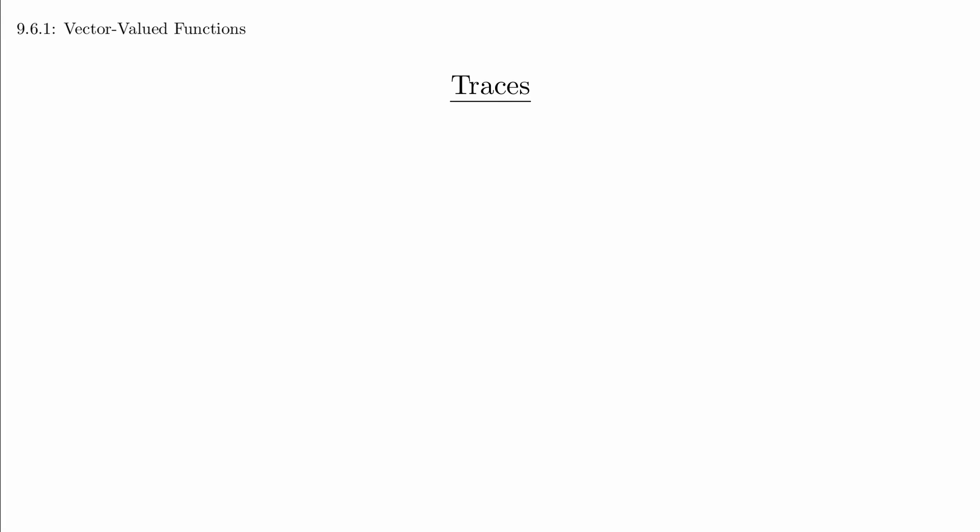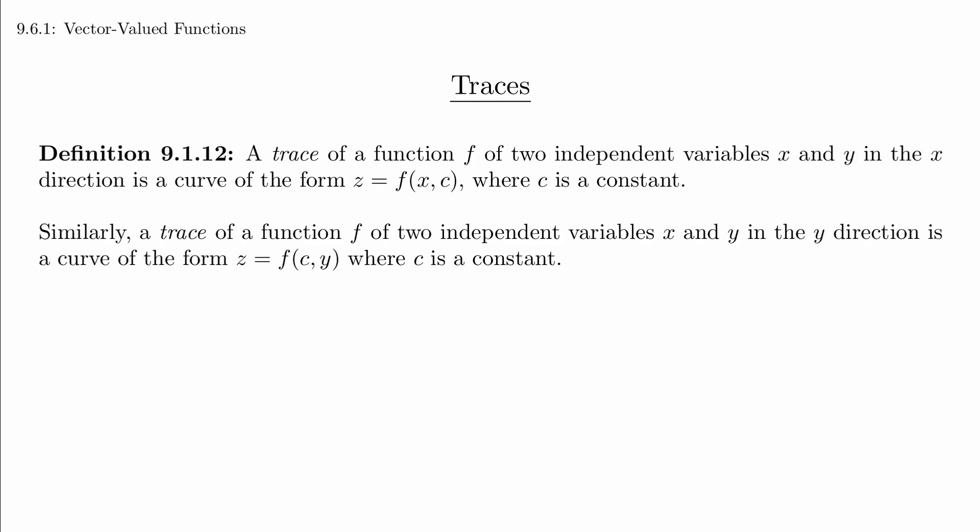Traces and level curves are two examples of curves that we can convert to vector functions. Just as before, these curves can help us to understand the shape of a surface. Here's the formal definition again as a reminder. Given a function z = f(x,y), we can get a trace by fixing one of the independent variables to be constant.